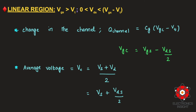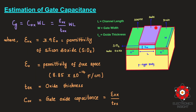Our ultimate aim now is to estimate the gate capacitance. The cross-sectional view of an NMOS transistor is shown with gate length denoted by L and gate width by W. The silicon dioxide gate oxide layer sits just beneath the gate metal, and its thickness is denoted by T_ox. We can model the gate along with the gate oxide layer as a parallel plate capacitor, with capacitance proportional to area over thickness.